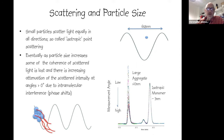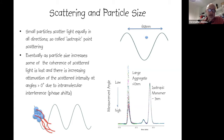Another property of particles that light scattering can probe is their size. Small particles tend to scatter light equally in all directions — they are so-called isotropic point scattering particles. As particle size increases relative to the wavelength of light, some coherence of the scattered light is lost from individual particles, and we see an increasing attenuation of scattered intensity at angles above zero degrees, due to intramolecular interference.